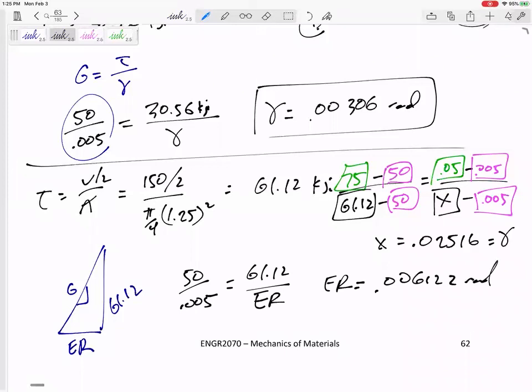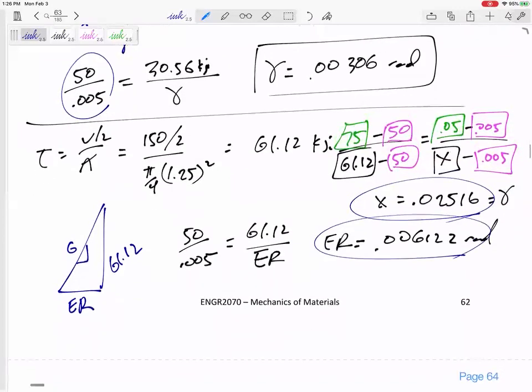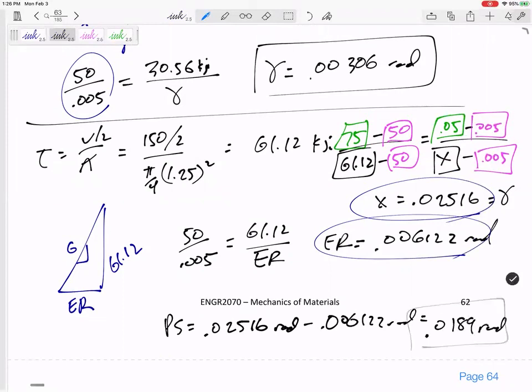This g, 50 over 0.005, is the same as 61.12 over elastic recovery. The elastic recovery is 0.00612 radians. What's the permanent set? If I was stretched to that and I came back and recovered that, then what am I left with? The permanent set would be 0.02516 radians minus 0.00612 radians equals 0.0189 radians. I feel like I'm beating a dead horse, but in the past my students have struggled so much. Good loading and unloading, hopefully no overkill. High hopes for y'all if you understand the stress-strain diagram.